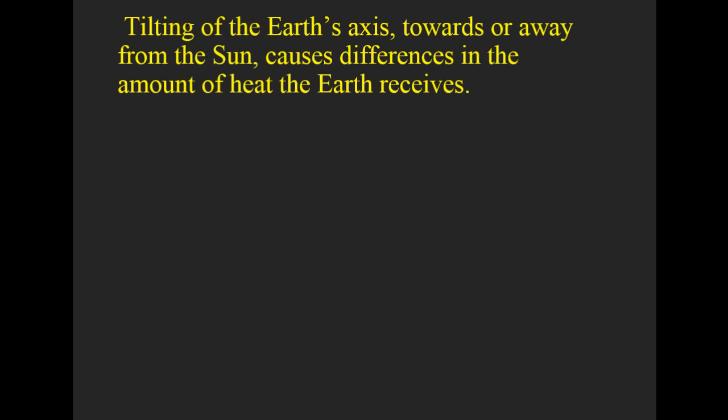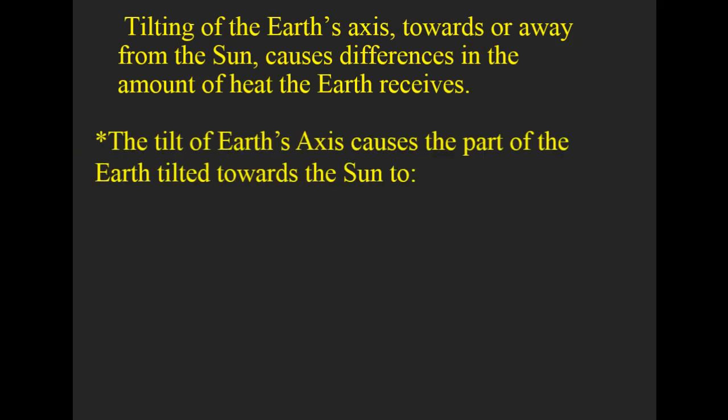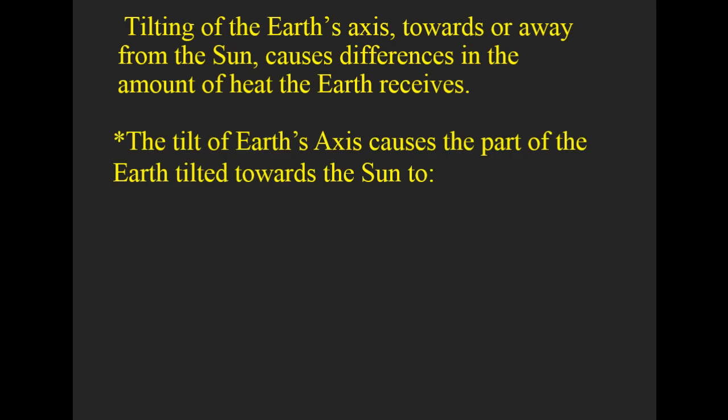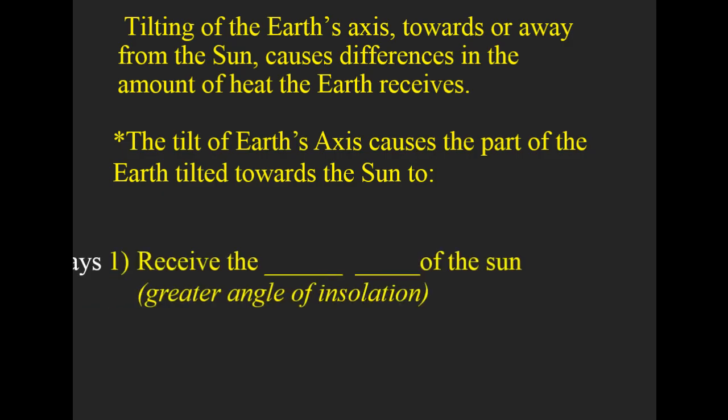The tilting of the Earth's axis towards or away from the sun will cause differences in the amount of heat that the Earth receives. This tilt of the Earth's axis causes the part of the Earth that's tilted towards the sun to receive direct rays from the sun.